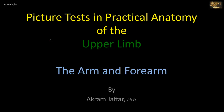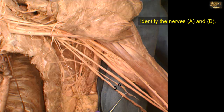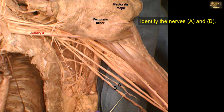Now I will deal with the anatomy of the arm and forearm. This is a view of the axilla showing the axillary artery, cords and branches of the brachial plexus. The pectoral muscles, pectoralis major and pectoralis minor, are reflected up. Let's try to find the capital M configuration of the medial and lateral cords and their terminal branches, which will serve as a clue for the brachial plexus.